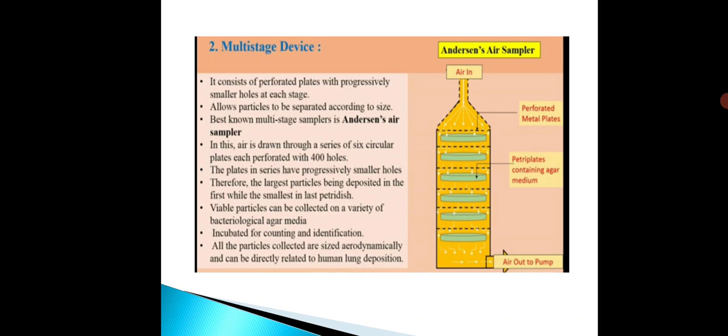Viable particles can be collected on a variety of agar media, incubated for counting and identification. All particles collected are sized aerodynamically and can be directly related to human lung deposition. On the basis of size, microorganisms settle onto the corresponding petri plate — largest particles settling first and smallest settling last. These plates are then allowed to incubate, and after incubation, colony counts are performed. On the basis of size, we can distinguish the microorganisms.